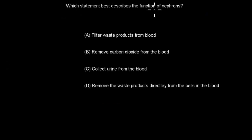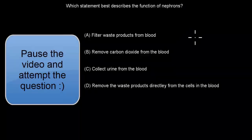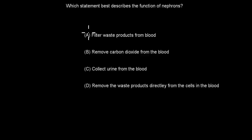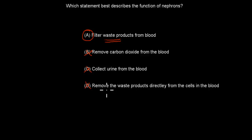Next: Which statement best describes the function of nephrons? A: filter waste products from the blood. B: remove carbon dioxide from the blood. C: collect urine from the blood. D: remove waste products directly from the cells. The correct answer is A — nephrons filter waste from the blood. B is incorrect; that's the lungs. C is too vague and doesn't make sense. D is incorrect because nephrons don't directly remove waste from cells; blood transports waste from cells to the kidneys.